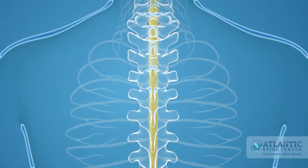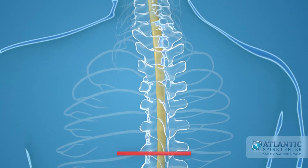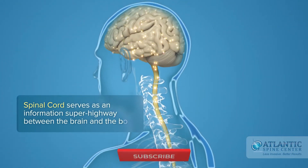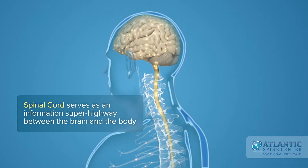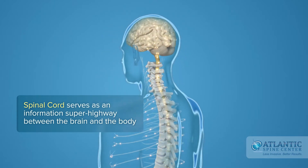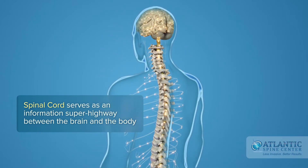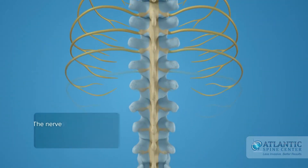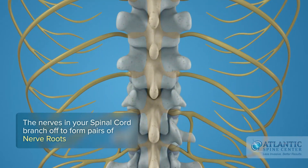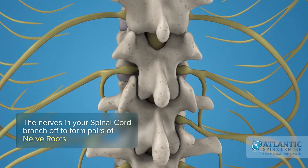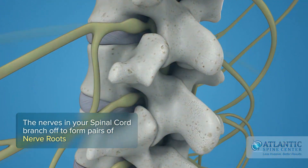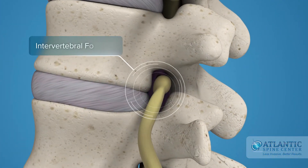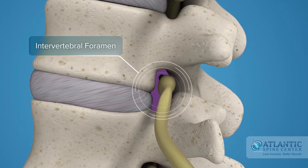The spinal cord is the major column of nerve tissue that is connected to the brain and serves as an information superhighway between the brain and the body. The nerves in your spinal cord branch off to form pairs of nerve roots that travel through the small openings between your vertebrae, called intervertebral foramens.